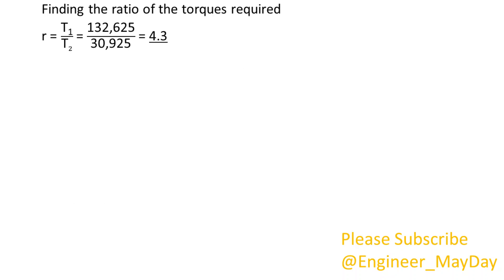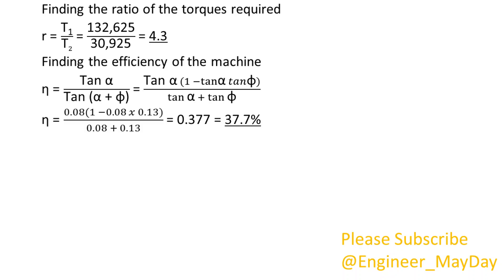Finding the ratio of the torque required: R equals 4.3. Finding the efficiency of the machine, which equals 37.7%.